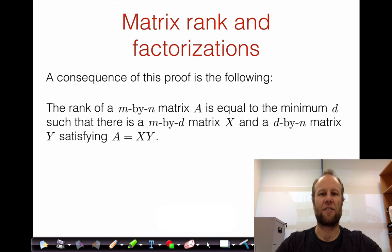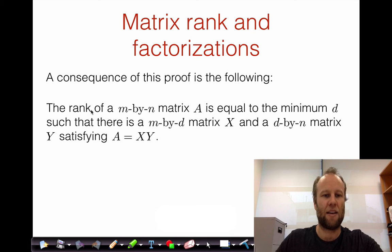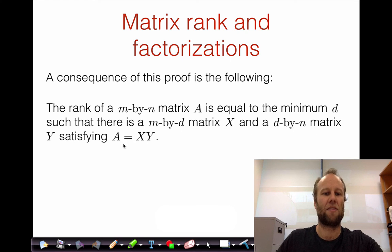Before we finish, let's make one more observation about the connection between matrix rank and factorizations. What this proof has actually shown is that we can equivalently express the rank of a matrix in terms of matrix factorizations. Namely, the rank of an m by n matrix equals the minimum d such that there exists an m by d matrix X and a d by n matrix Y with A equal to X times Y.